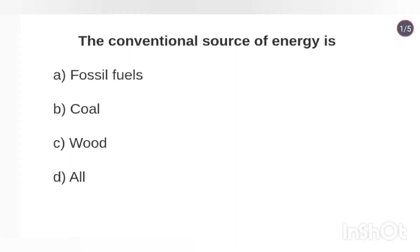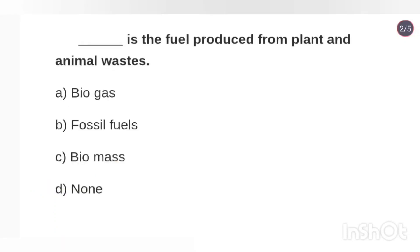When we cannot reuse a source of energy after using it once, we call them conventional sources of energy. Biomass is the fuel produced from plant and animal waste.